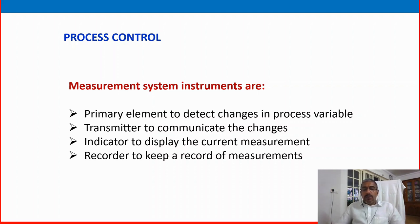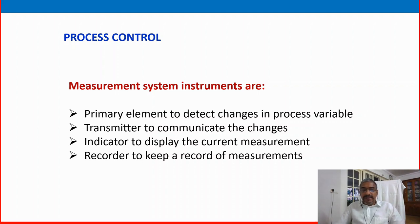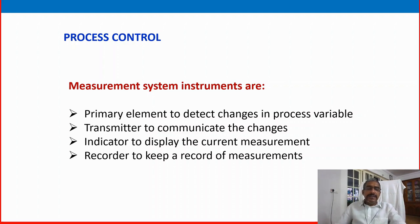The transmitter is an instrument or equipment which communicates the changes between two points — from the primary element to the next component, which could be a controller, indicator, recorder, or whatever it is. An indicator displays the current measurement when we want to see the information. A recorder keeps a proper record saved either physically or in soft form like a hard disk, for future reference or review. These are the main equipment in the measurement system.